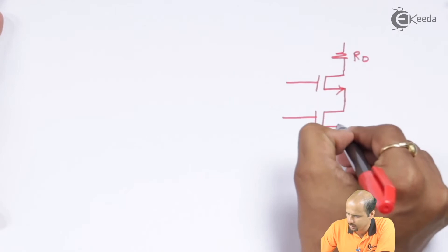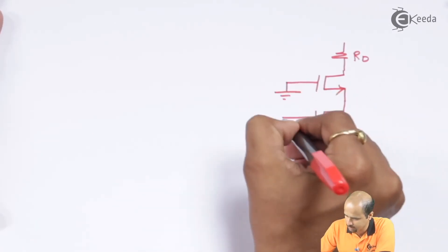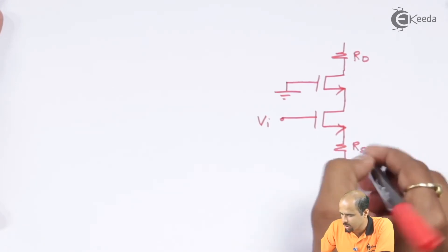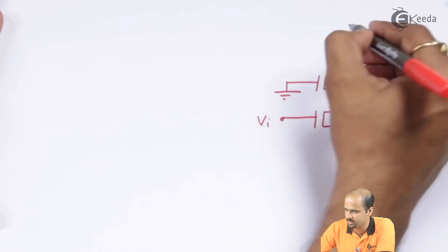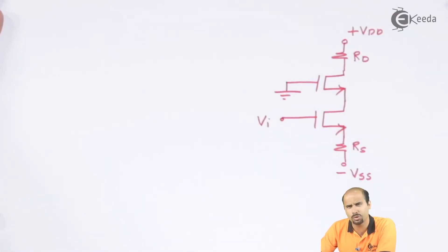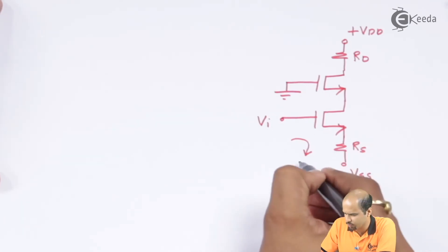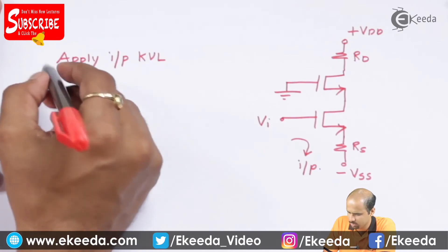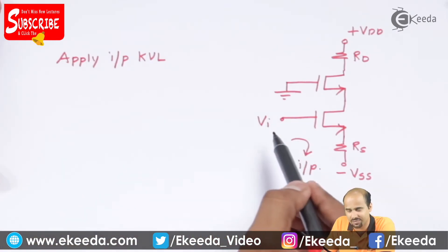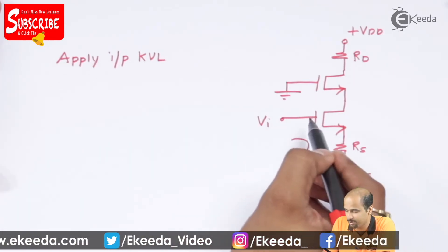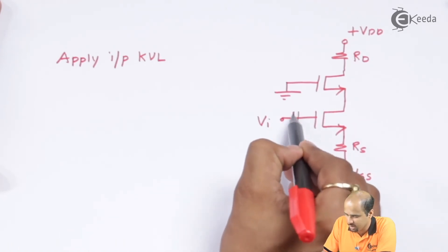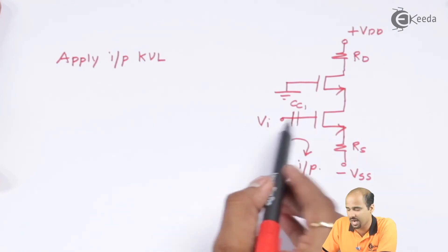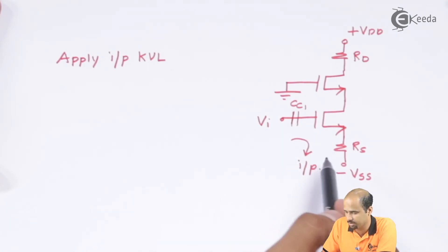For the MOSFET circuit — an enhancement type MOSFET as shown — we have the source grounded and input VI applied at the gate, with a source resistance RS. We generally have minus VSS and plus VDD supplies. To avoid mixing between DC and AC, we place a coupling capacitor at the input, which separates the AC input VI and sets up the input KVL loop.